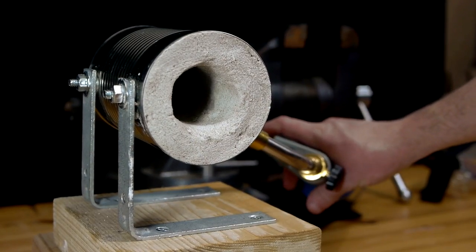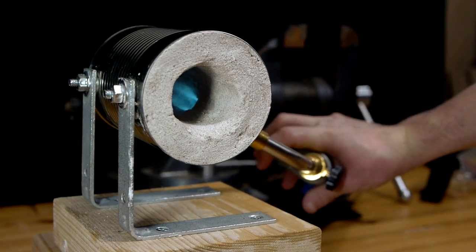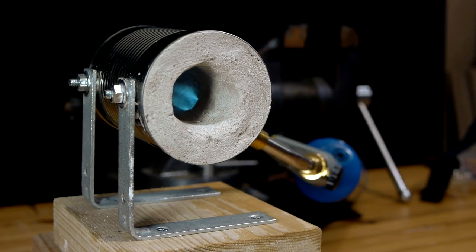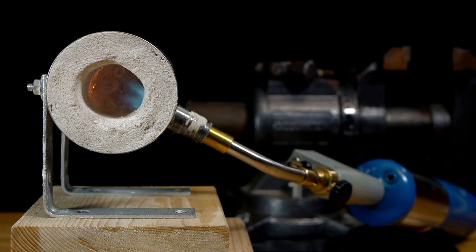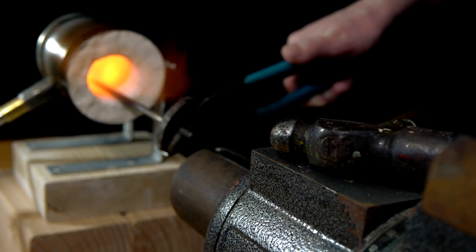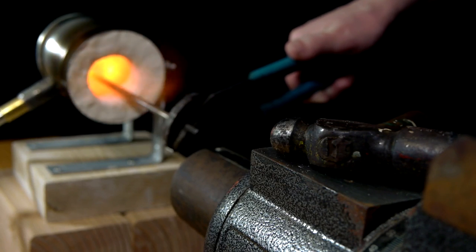The forge is now ready for its first burn. Until the heat has driven all the water out of the plaster, the burn will be rather cold. Soon enough, however, this forge will be cooking at over 2,000 degrees Fahrenheit, plenty hot for forging steel or glass.